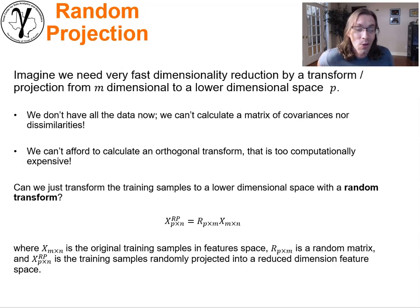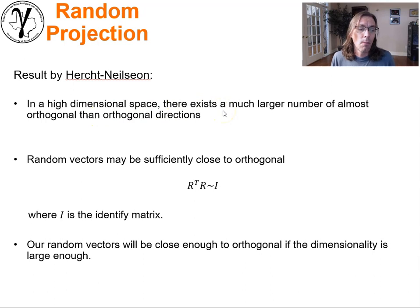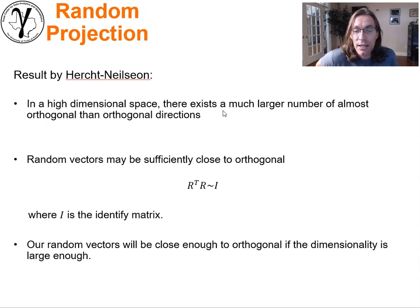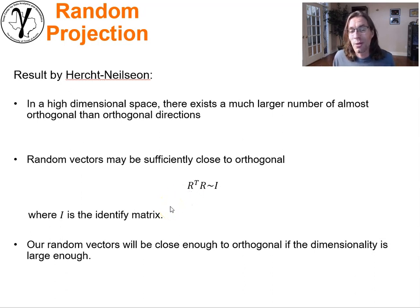We can work with that in a lower dimensional space and do all our calculations — remember the curse of dimensionality. So the question is: can we do this? It turns out there's a very interesting result: in a high-dimensional space, there exists a much larger number of almost orthogonal than orthogonal directions. If we take random vectors and the dimensionality is large enough, we will with high probability be sufficiently close to orthogonal to assume we're orthogonal. In other words, if we take our random vectors, the transform multiplied by itself will be close enough to the identity matrix. Our random vectors will be close enough to orthogonal if the dimensionality is large enough. That's pretty amazing.